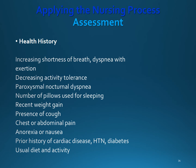As we apply the nursing process, we need to get a health history by asking specific questions about increasing shortness of breath, dyspnea with exertion, decreasing activity tolerance, paroxysmal nocturnal dyspnea, the number of pillows used for sleeping, recent weight gain, presence of cough, chest or abdominal pain, anorexia or nausea, prior history of cardiac disease, hypertension, diabetes, and what their usual diet and activities would be.